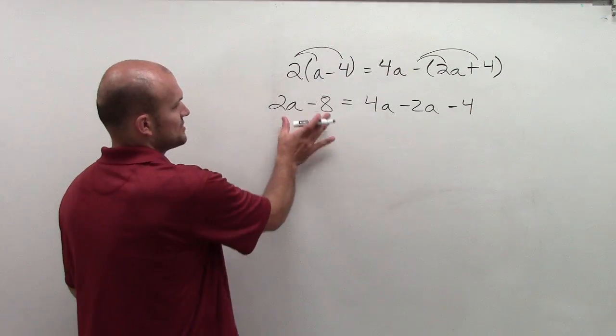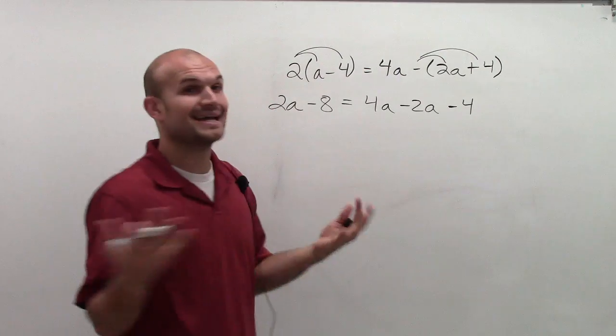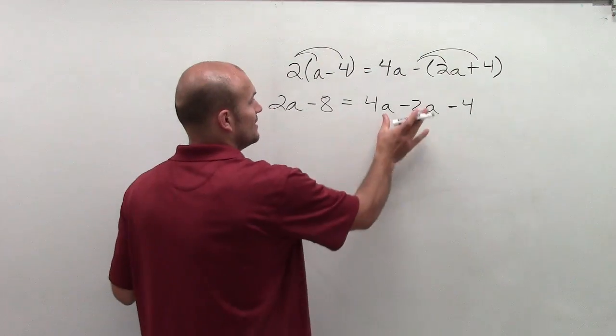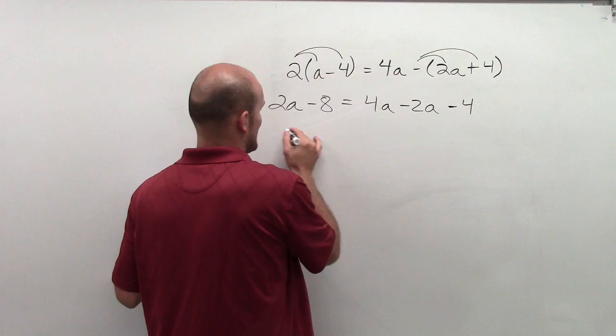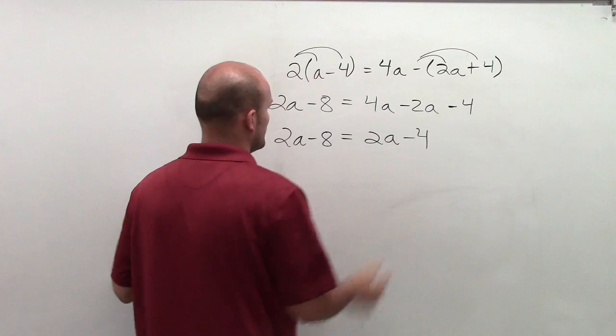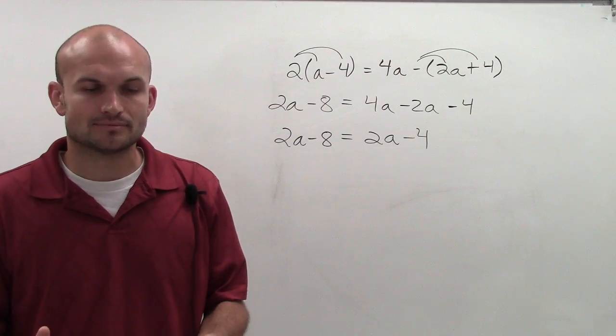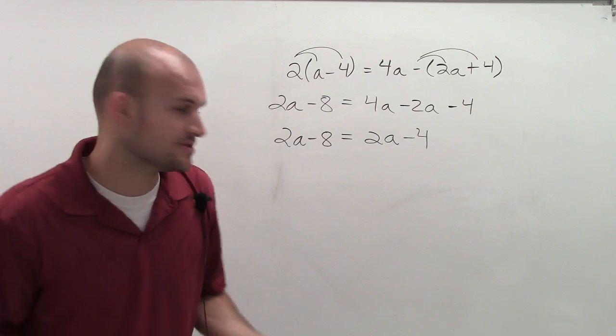So now there's nothing left I can do here on the left side, but on the right side, what we notice is I can combine terms. 4a minus 2a is 2a, so I'll just rewrite the left side: 2a minus 8. Now I'm just going to stop right there and take a look at it and see what my possible options are.